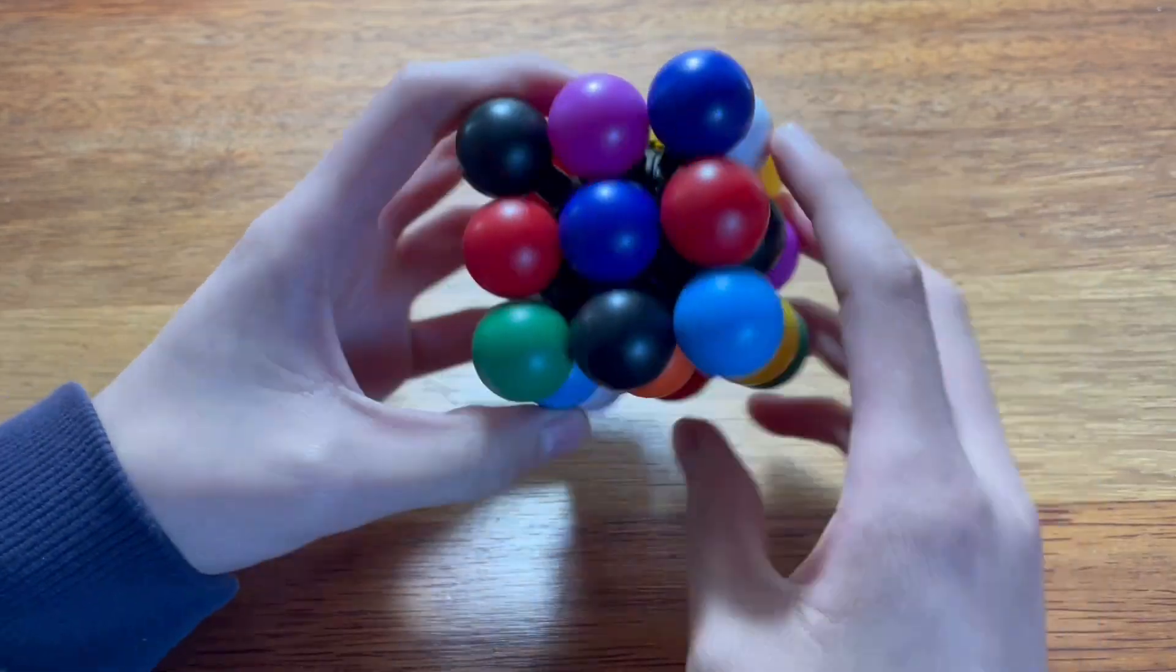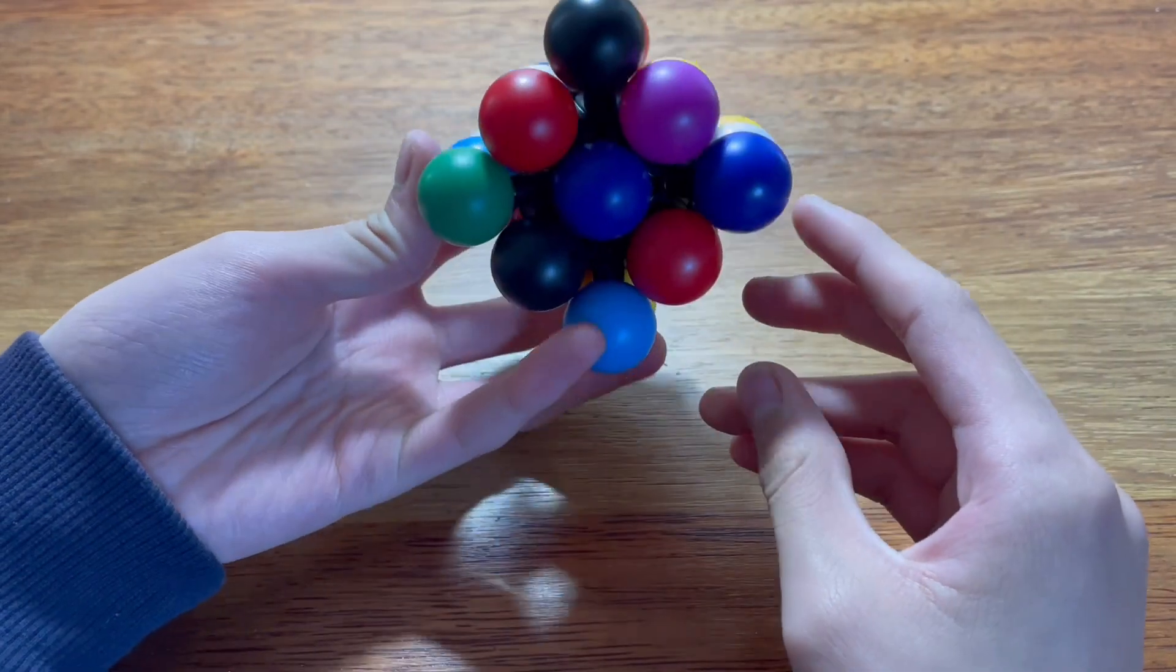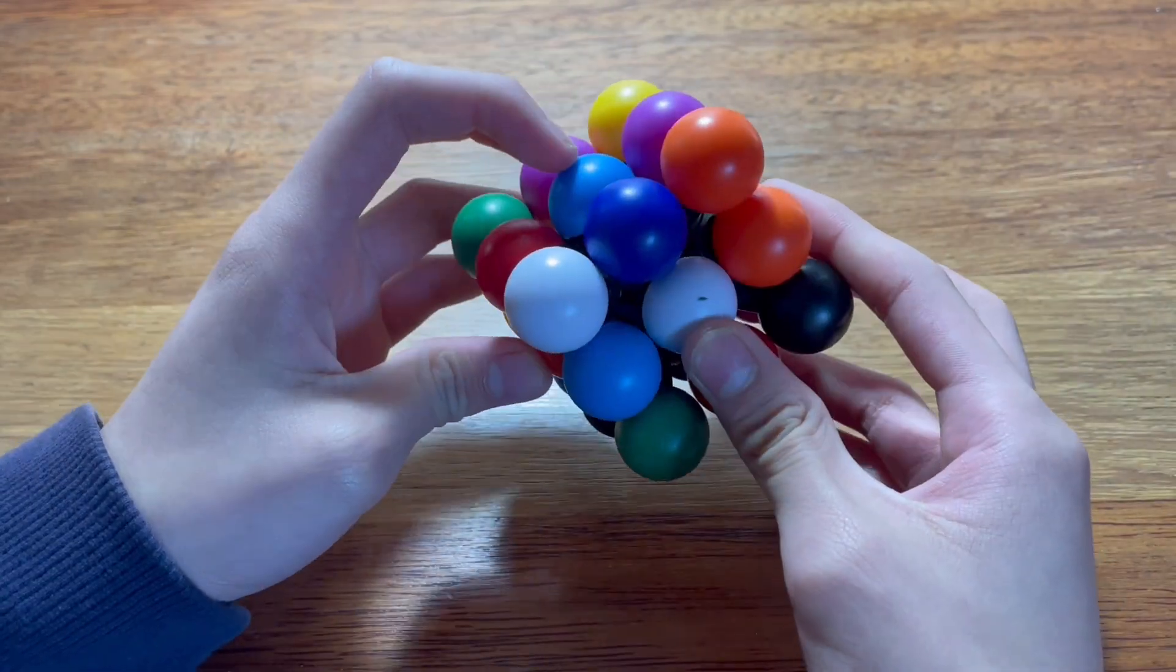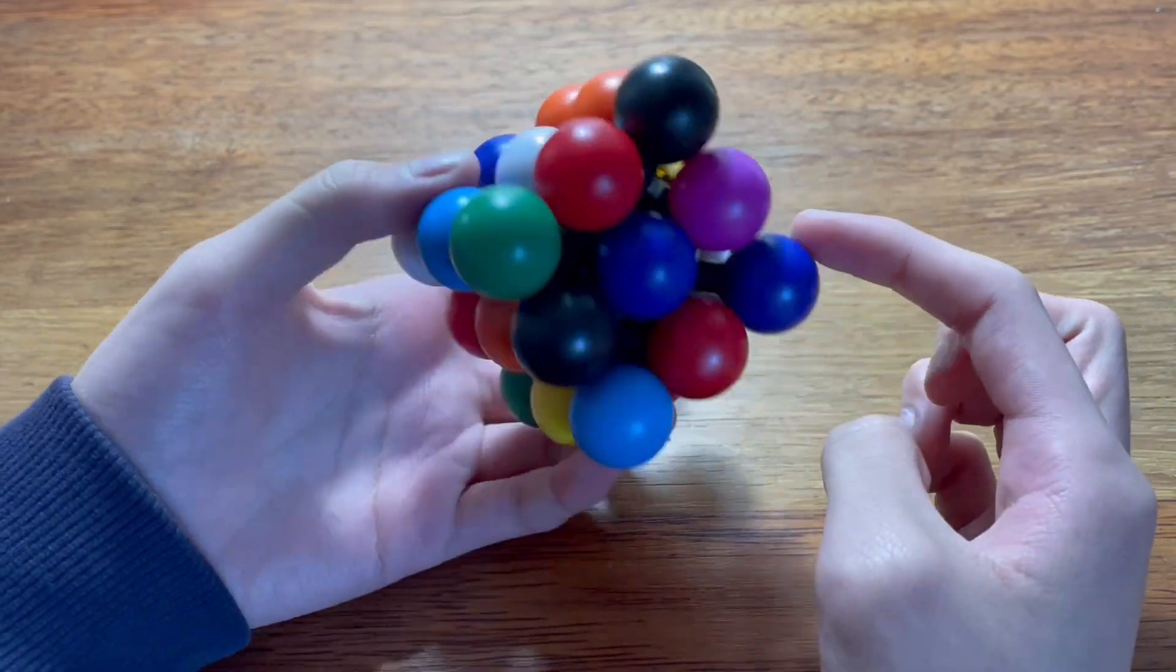So first we're just going to have a look. There seems to be three of every color in this. So there's 26 pieces. So there should be one color with only two pieces.